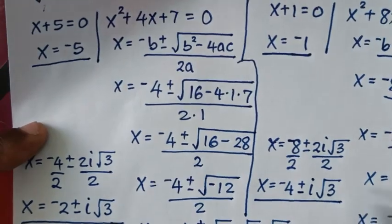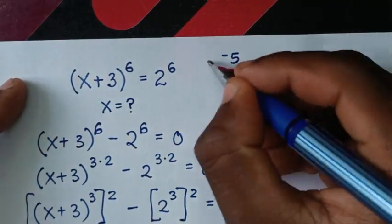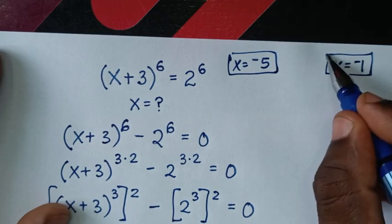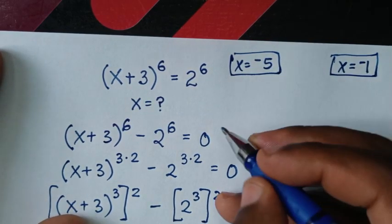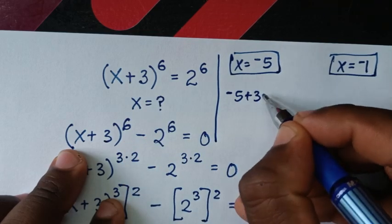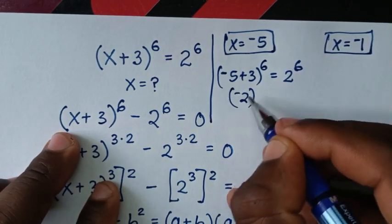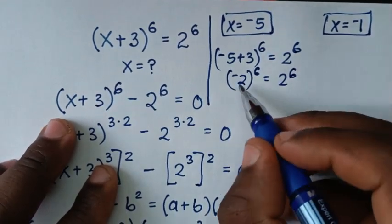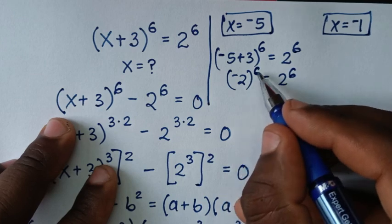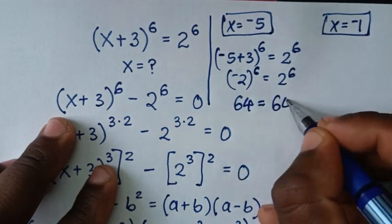Let's check the real solutions. For x = −5: substitute into (x + 3)^6 = 2^6. We get (−5 + 3)^6 = (−2)^6 = 2^6. Now 2^4 = 16, and 16 × 4 = 64, which equals 2^6 = 64. Confirmed.